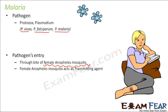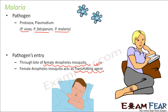The female Anopheles mosquito acts as a transmitting agent because it transmits the pathogen from one person to another. For example, if a person is suffering from malaria, the protozoa Plasmodium is inside their body. When the mosquito bites that person, it sucks in some protozoa, and when it bites somebody else, it can inject the same pathogen — transmitting it from one person to another. In malaria, the red blood cells get ruptured.